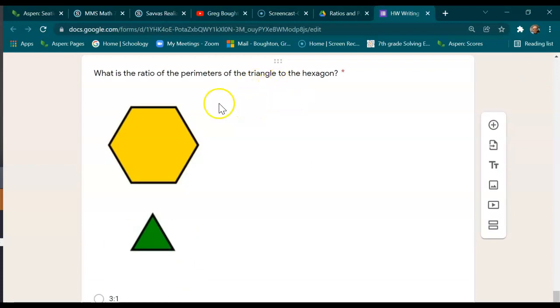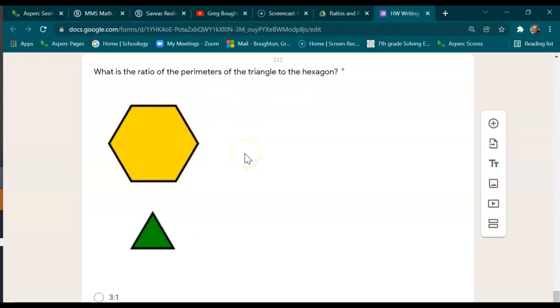What is the ratio of the perimeters of the triangle to the hexagon? You're going to do the same idea with this, where you're counting the lines and comparing the two perimeters.